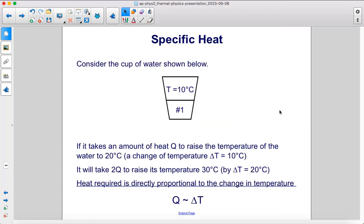Consider the cup of water shown below. If it takes an amount of heat Q to raise the temperature of the water to 20 degrees Celsius, which would be a change of temperature ΔT of 10 degrees Celsius, it would take 2Q to raise its temperature 30 degrees. Therefore, the change in temperature would be 20 degrees Celsius. Heat required is directly proportional to the change in temperature.